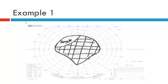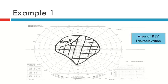Let's go through some examples. Here we have a patient who has double vision in laevo elevation. Given that the area of BSV is opposite to laevo elevation, we expect that the affected muscle will have its field of action in dextro depression. In dextro depression, we have two muscles that work in that position: the right inferior rectus and the left superior oblique. The field of BSV cannot give us further information to isolate which of those two is likely — it is your other investigations that will identify the affected muscle.